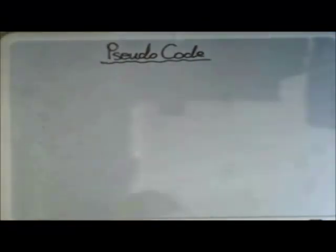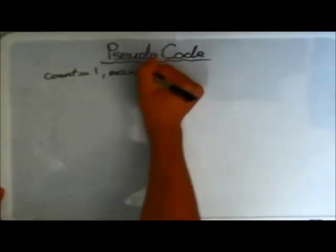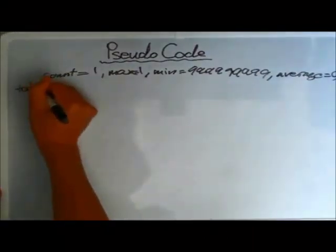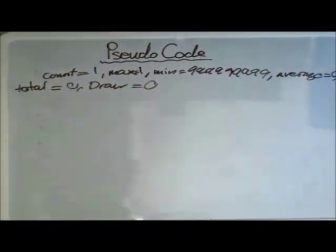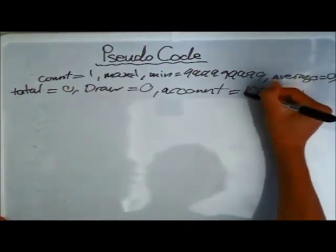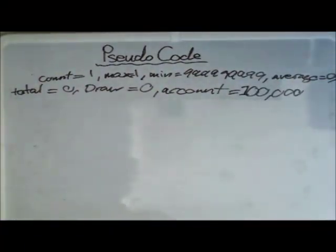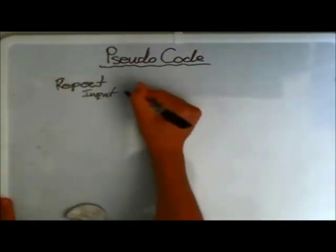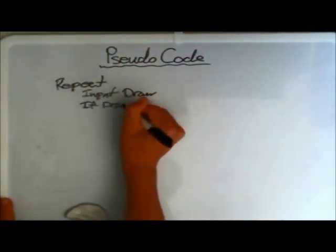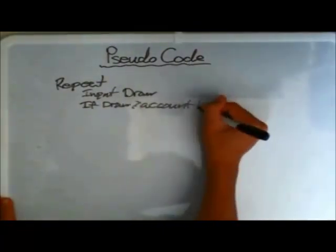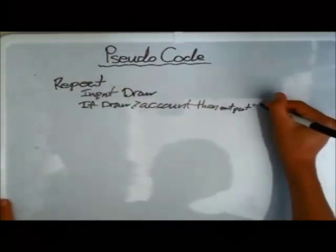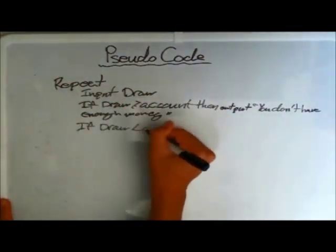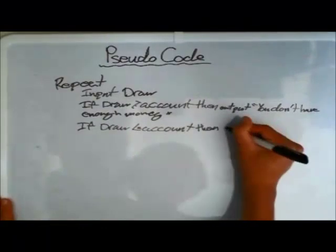For the third answer using REPEAT UNTIL, we set our variables: count equals one, max equals zero, and min must be set to a very large number in order to capture the smallest value. If you set min to zero and the lowest withdrawal is one, it will not save the number one — that's why you must use a very large number.